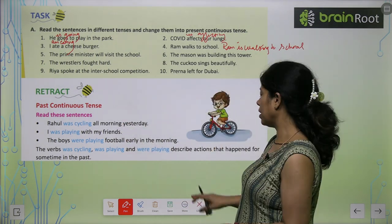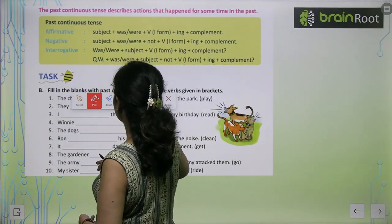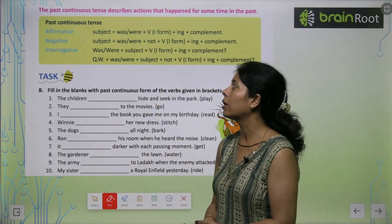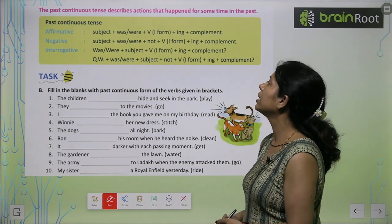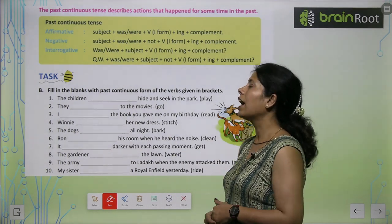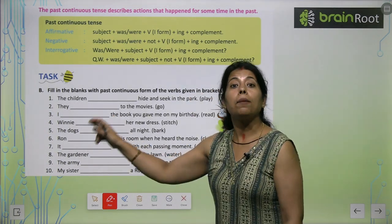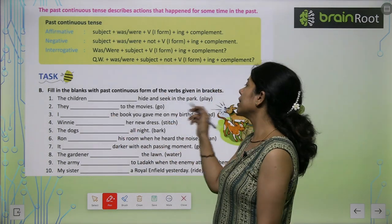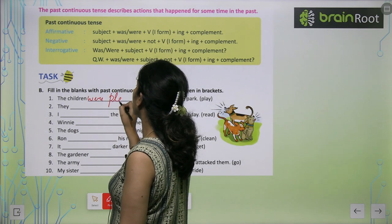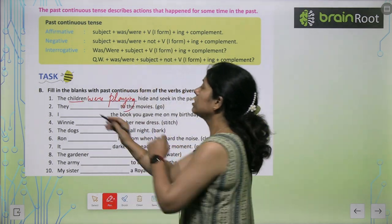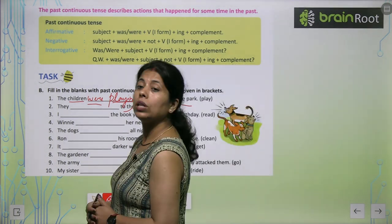For past continuous tense: was/are will come with singular subjects and were with plural subjects. The formula is: subject plus was/were plus first form of verb and -ing. If it's negative, add 'not' after was/were. For interrogative, was/were comes first, then subject plus first form of verb and -ing.